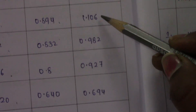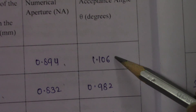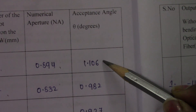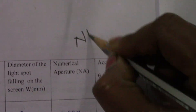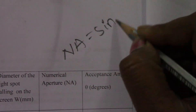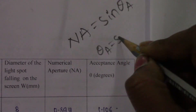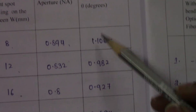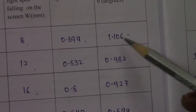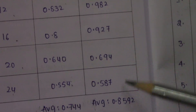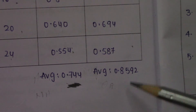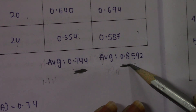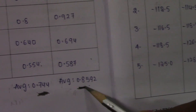I also calculated the acceptance angle. Since NA = sin(θ_a), we get θ_a = sin⁻¹(NA). You need to measure θ_a for each NA value, then take the average of all five readings. That gives the average acceptance angle for this fiber.